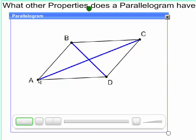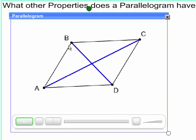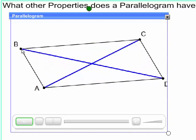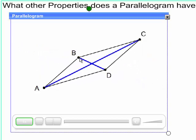Diagonals bisect each other. So you can see as I drag around the points, you can see that those diagonals are cut in half by each other.